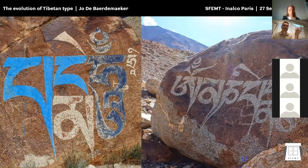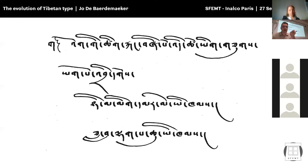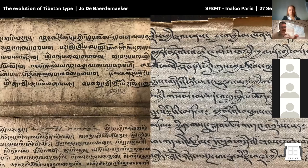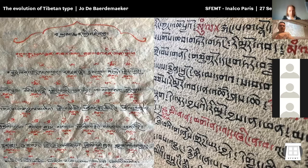At the same time, the more informal or shorthand script was developed also by Tonmi Sambhota. This script is called Ume, meaning the headline is removed — at the top of characters, you don't see the headline anymore. It's a more loose, shortened form of writing, used for quick notes and informal text. If I would write a letter to my mother or a grocery list, I would write it in Ume and not in the official Uchen style. This specific Ume style was afterwards developed into more than ten different sorts of calligraphy.